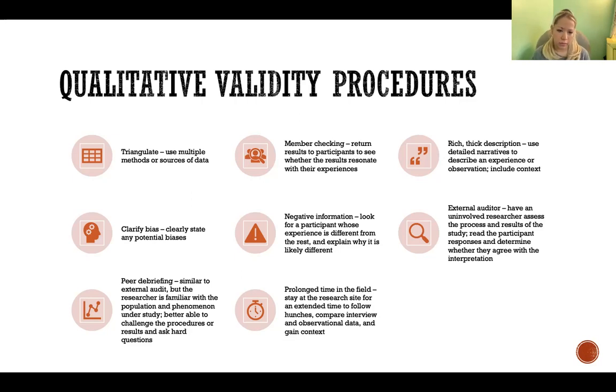Clarified bias — you want to clearly state any potential biases that you, the researcher, might have.